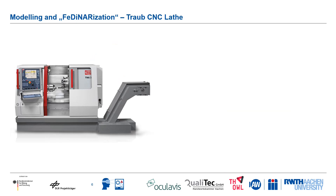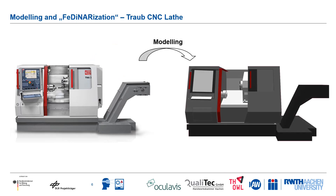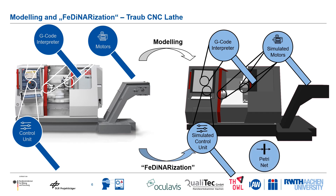We create the digital twin by modeling the real machine and make it experimentable by adding specific components like simulated motors and a control unit. Also, we Fedinarize the machine by providing the system with learning task information using a Petri net. This way we can enhance the experience — for example, by coloring parts that are involved in a crash.